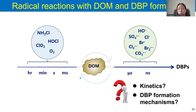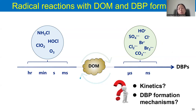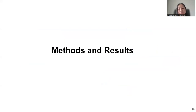Looking at the research history, people have put a lot of efforts into understanding how disinfectants such as free chlorine, ozone, and chlorine dioxide react with dissolved organic matter and result in the formation of DBPs. However, for these radical-involved processes, because the reactions are very fast — occurring at nanoseconds to microseconds — we do not have very good understanding about their kinetics and whether they could react with DOM to form toxic byproducts. So our group focuses on the radicals and DOM reactions.